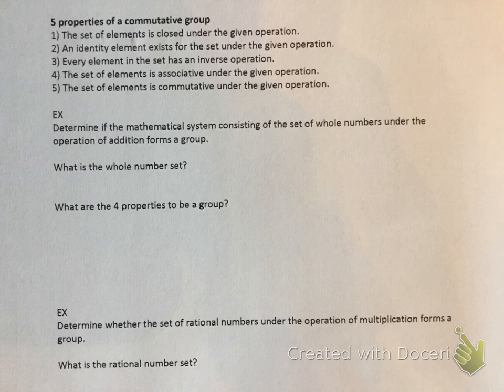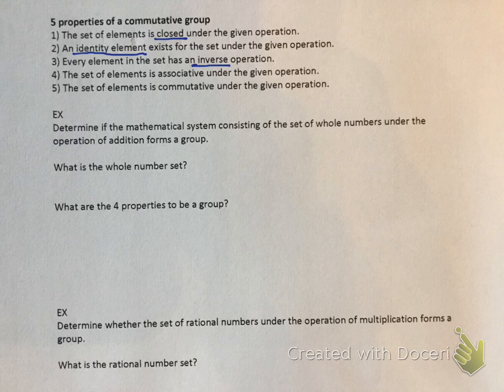So let's look at the five properties. You're in the CIA. It has to be closed. It has to have an identity element. Every element in the set has an inverse. And the set of elements is both associative and commutative. So now there are five properties for a commutative group.